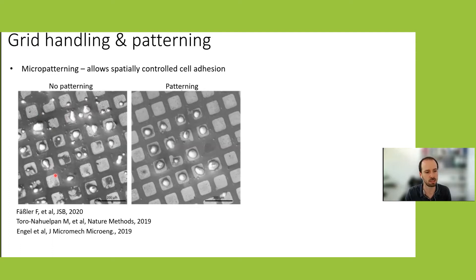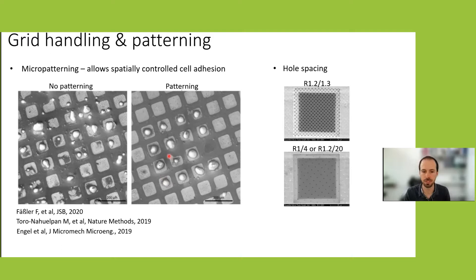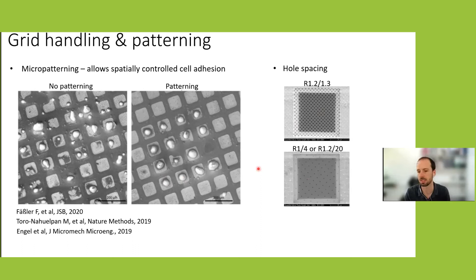Micro-patterning is highly advisable because cells tend to grow randomly on grids and prefer grid bars over perforated carbon foil. Patterning, recently established by three independent groups, is very powerful and can facilitate the whole CryoCLEM workflow. If patterning is not available, one can use grid patterns with much more carbon and fewer holes, encouraging cells to also grow inside the squares.